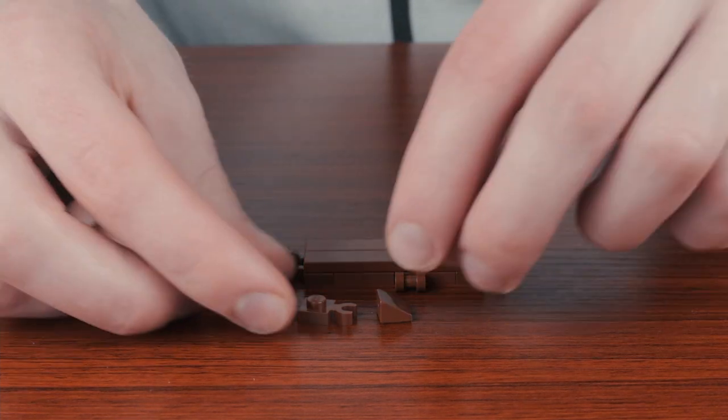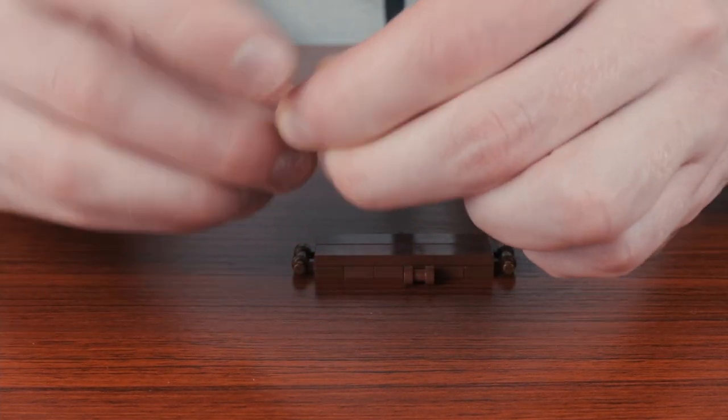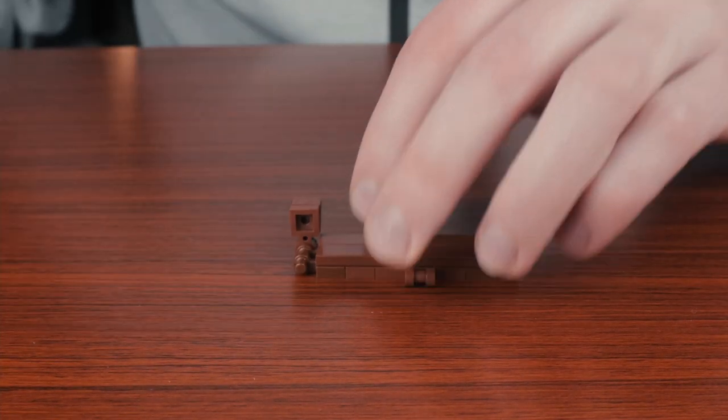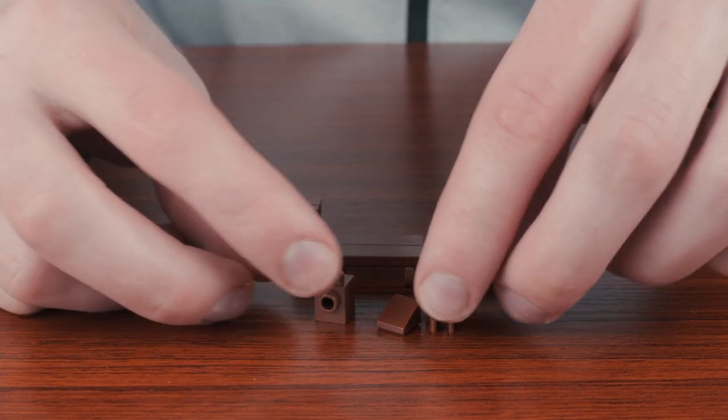To get the shaping on the front, we can use a couple 1x1 plates with vertical clips with a few cheese slopes, as well as some additional slopes and inverted slopes to create the nice shaping on the bow of the ship.